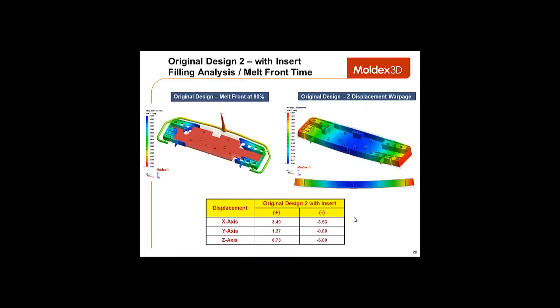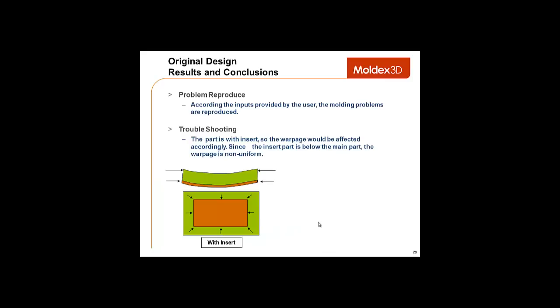On this slide, we see the original design with a melt front of 80% and the original design with the z-displacement warpage. Below is a table with the warpage for the original design 2 with the insert. For this model, users wanted to reduce the warpage problem. The issue here was that the part was with the part insert. Because the insert is below the cavity, the warpage is non-uniform.